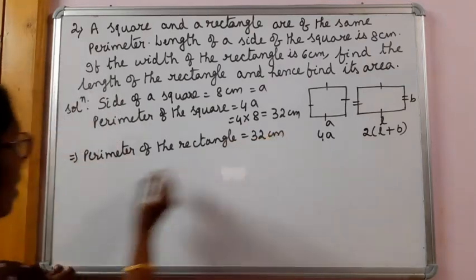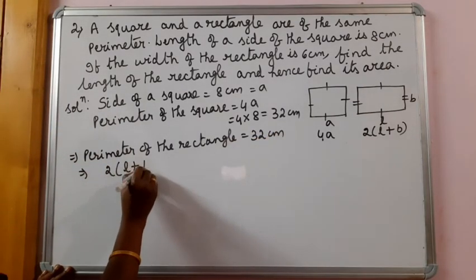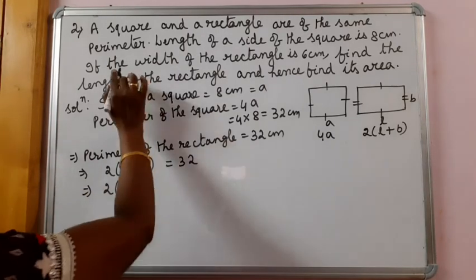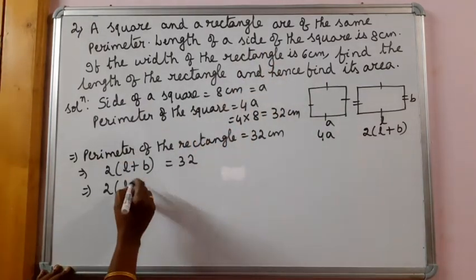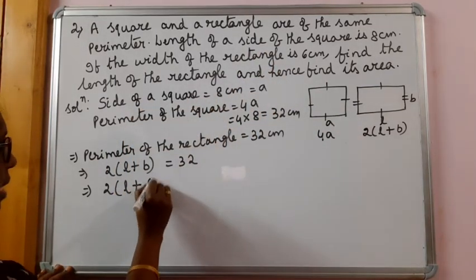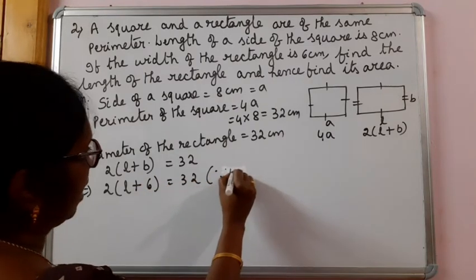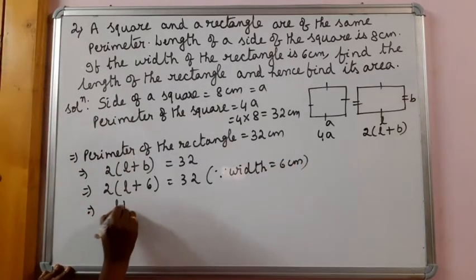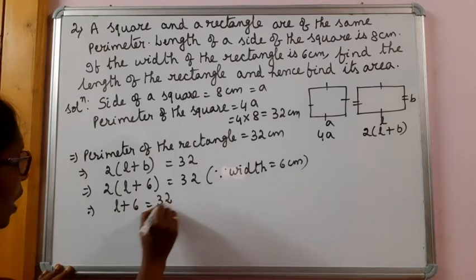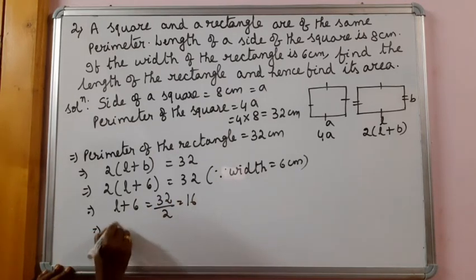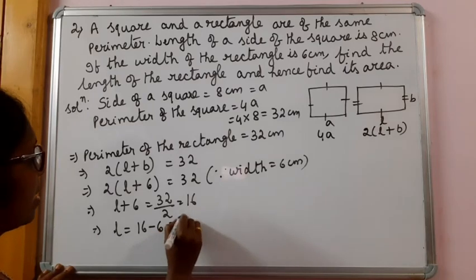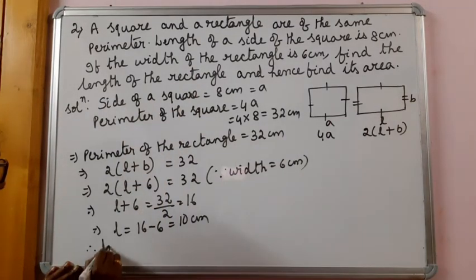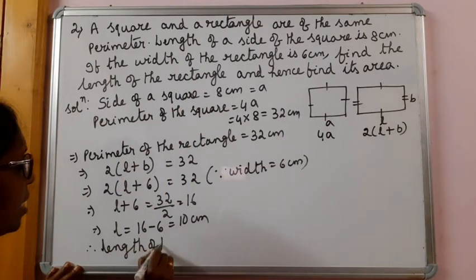We know the formula for finding the perimeter of the rectangle is 2 into L plus B equals 32. Width of the rectangle is given as 6 cm, so 2 into L plus 6 equals 32. That implies L plus 6 equals 32 by 2, that is 16, so length equals 16 minus 6, which is 10 cm. Therefore the length of the rectangle is 10 cm.